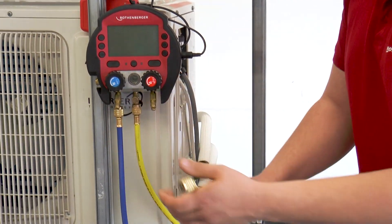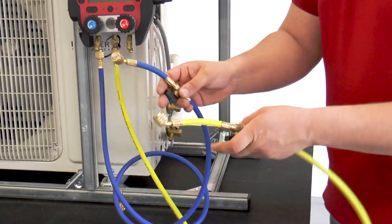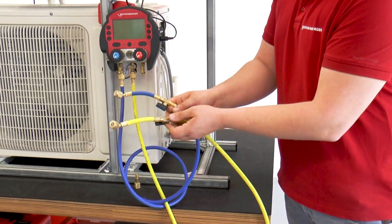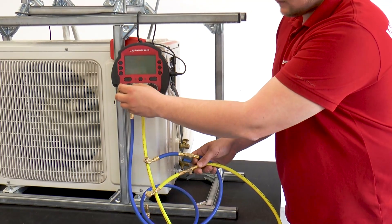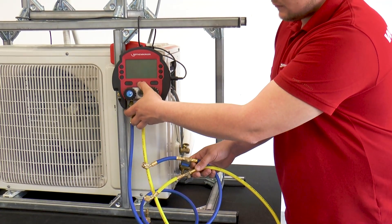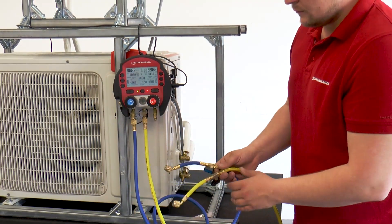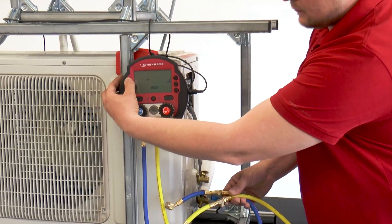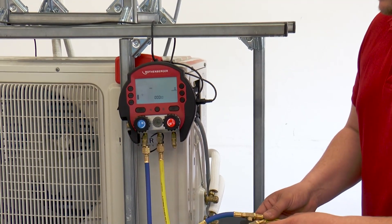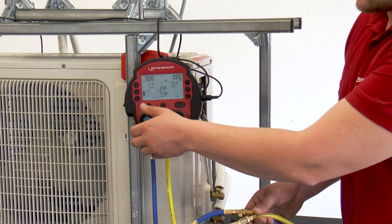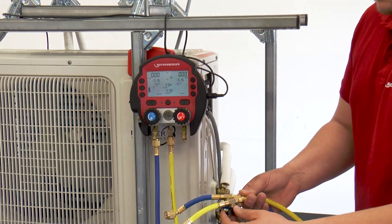After the hoses have been connected to the Roll Cool 600, with the shut-off valves of the hoses open, the valves of the Roll Cool are opened and the unit is switched on. Now, the Roll Cool 600 calibrates itself to the ambient air pressure. As soon as the Roll Cool has calibrated itself, the working valves are closed.